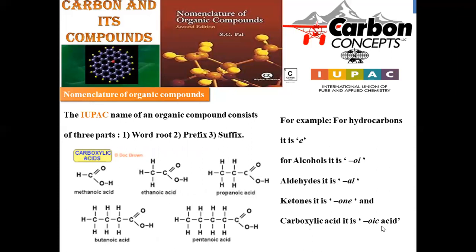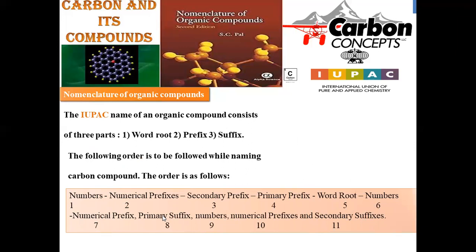For carboxylic acids, 'oic acid' is the suffix. One carbon: methanoic acid (common name: formic acid). Two carbons: ethanoic acid (common name: acetic acid). Three carbons: propanoic acid (prop is root word, oic acid is functional group suffix). Four carbons: butanoic acid. Five carbons: pentanoic acid. This is the pattern for carboxylic acid naming - oic acid is always the suffix.